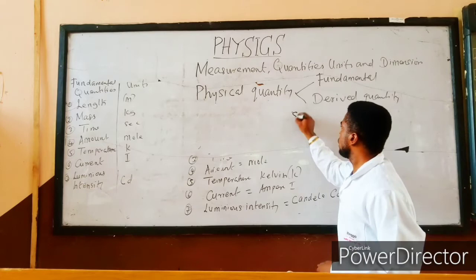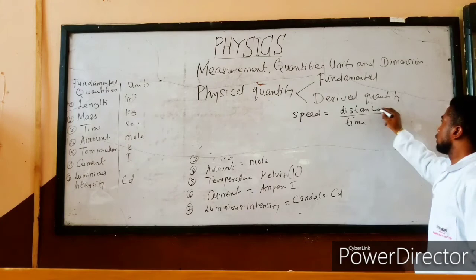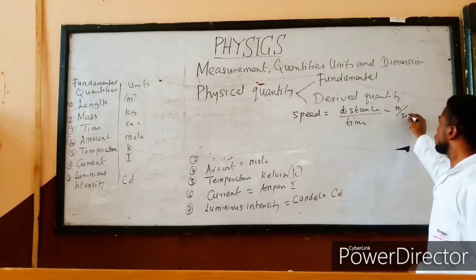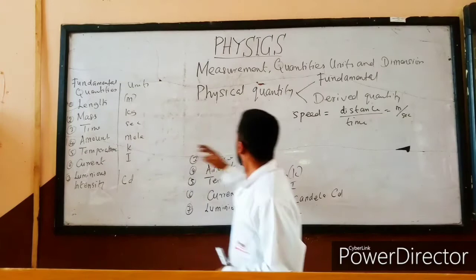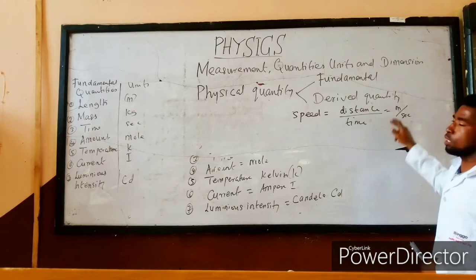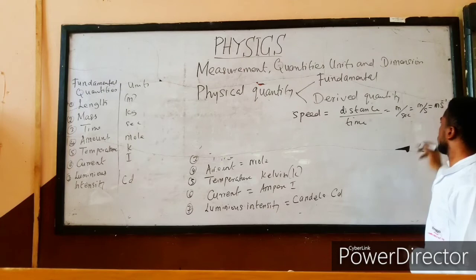Let us take speed as an example. Speed equals distance over time. Distance is measured in meters and time is measured in seconds, so the unit of speed is meter per second. Meter is a fundamental quantity, and seconds is also a fundamental quantity. So speed is derived by combining these two, making it a derived quantity with the unit meter per second.